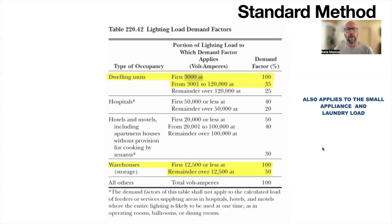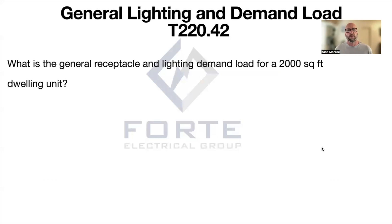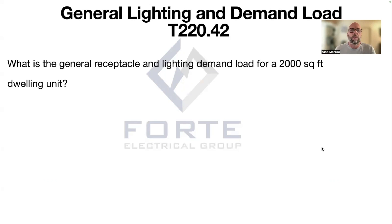So let's get started. What is the general receptacle and lighting demand for a 2,000 square foot dwelling unit? We know we have 2,000 square feet, and according to the code we have to allow 3 VA per square foot, so we take 2,000 and multiply it by 3, which gives us 6,000 VA.